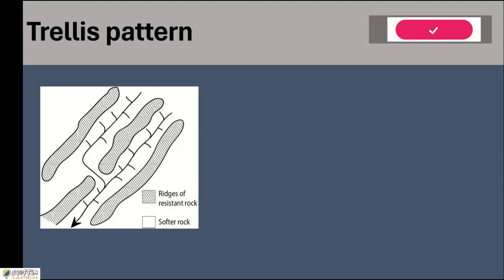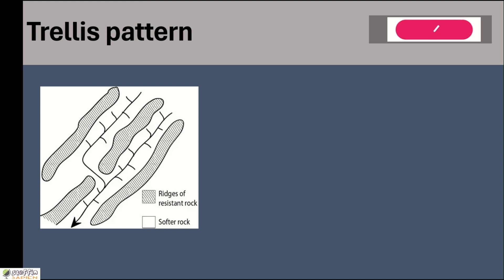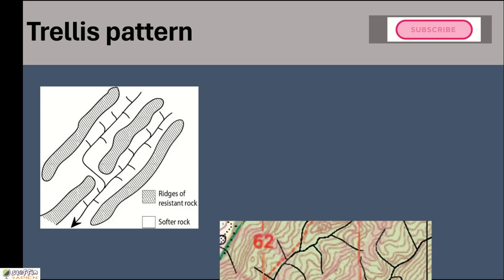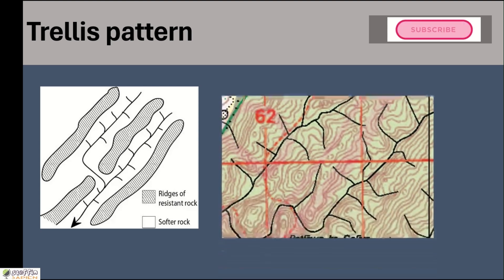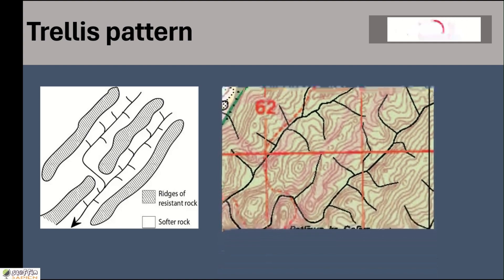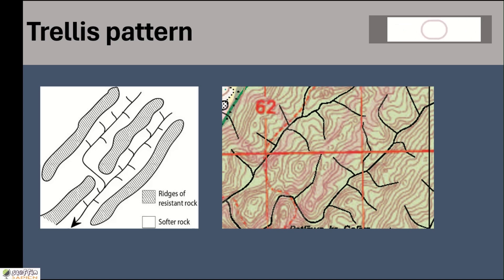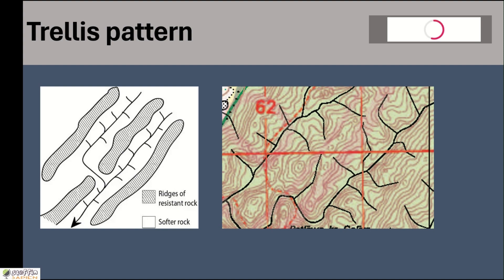Trellis pattern: in trellis pattern, rivers flow almost parallel to each other and their tributaries join the main river almost at 90 degree angle. We have the main stream flowing from northeast to southwest direction and the tributaries of these two rivers joining them almost at 90 degrees. This kind of pattern is called trellis drainage pattern.